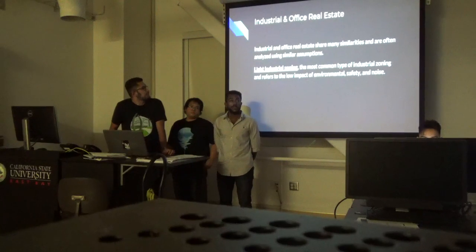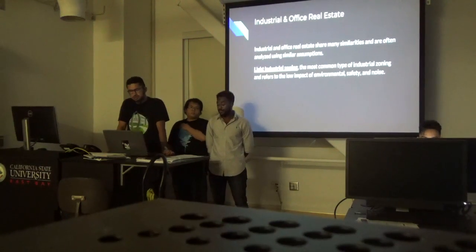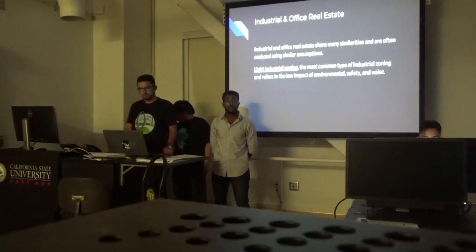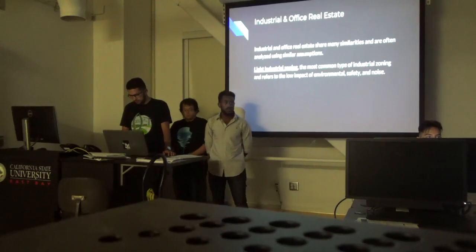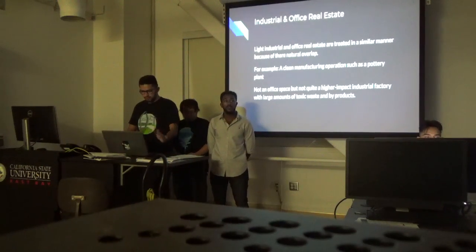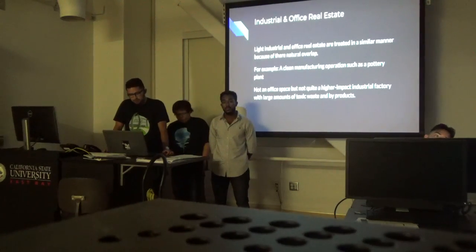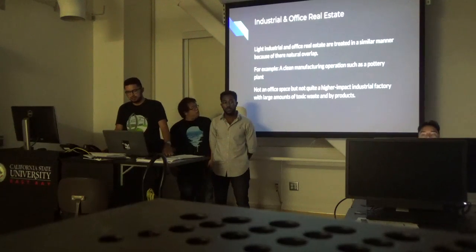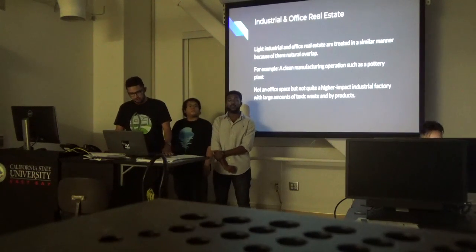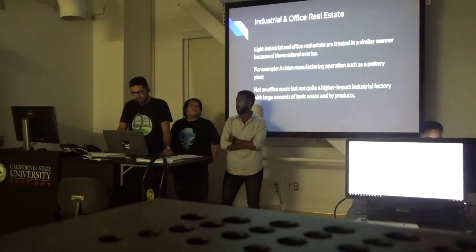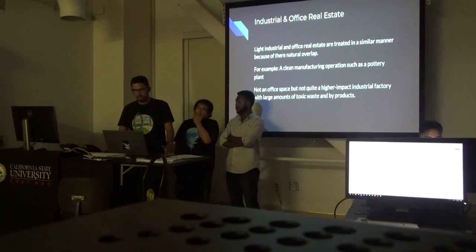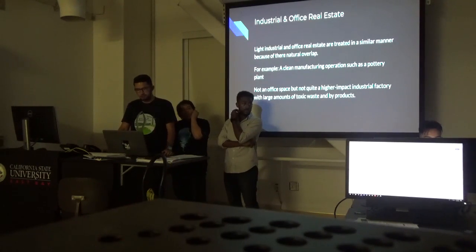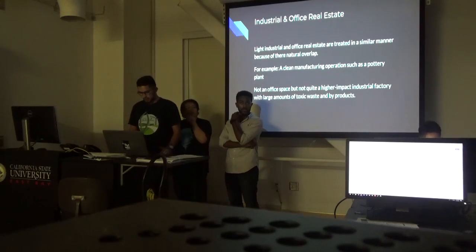Industrial and office real estate share many similarities and are often analyzed using similar assumptions. Light industrial zoning is the most common type of industrial zoning and refers to low impact in the environmental, safety, and noise categories. Light industrial and office real estate are usually treated in a similar manner because they overlap a lot. For example, a clean manufacturing operation such as a pottery plant — it isn't a high-impact heavy industrial factory, but it's not an office either. Everybody would still call it industrial.